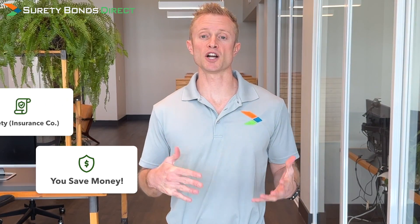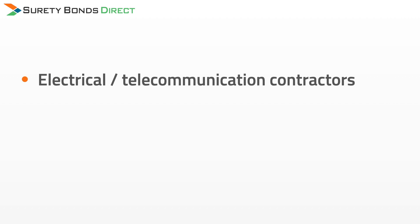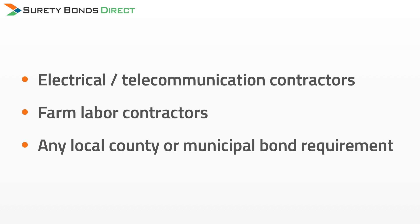In the case of Washington contractor license bonds, Surety Bonds Direct has already secured fixed low prices with zero credit check for the following license bonds: electrical telecommunications contractors, farm labor contractors, and any localized county or municipal bond requirement. The remaining licensed bonds require a quoted rate to determine exact pricing. Let's start by looking at some example pricing, starting with the fixed price bonds, then we'll look at pricing for a bond that requires a custom quote.